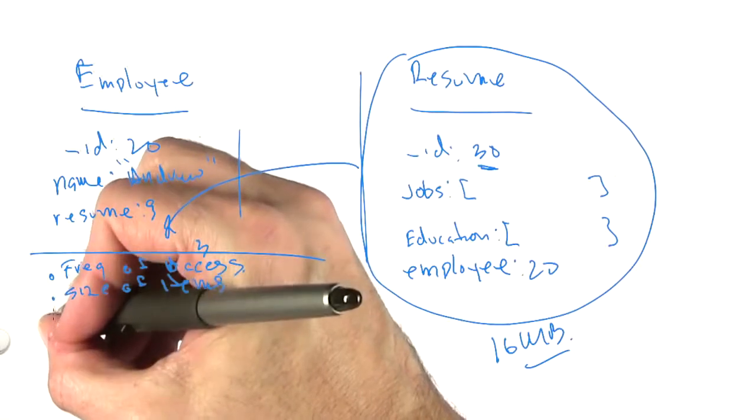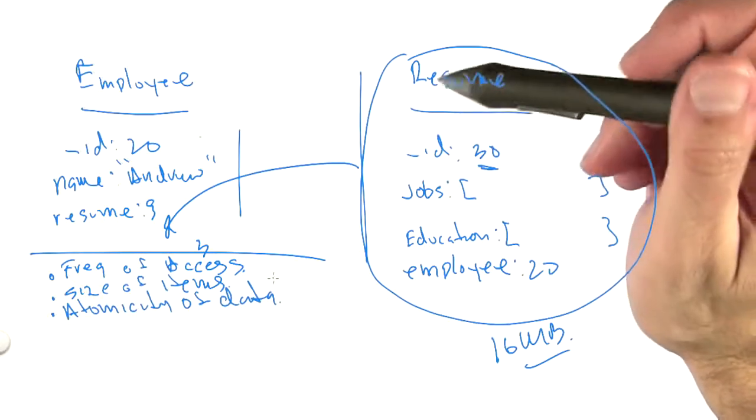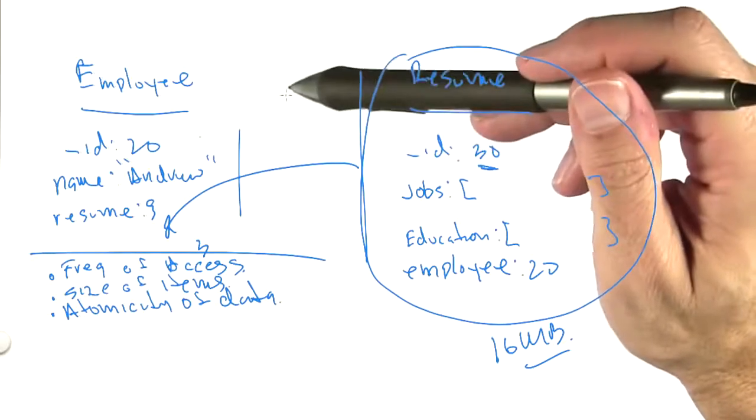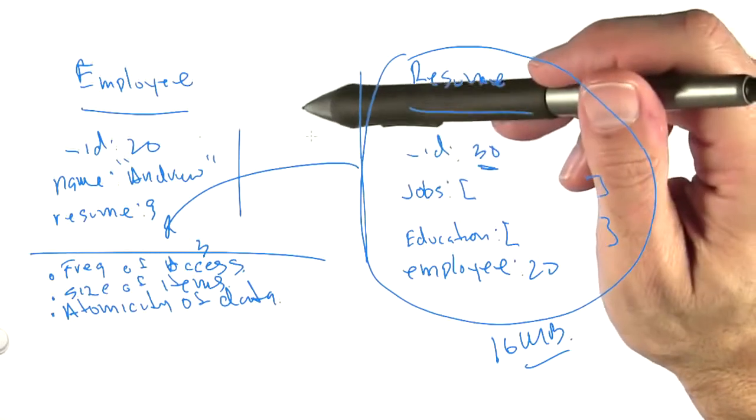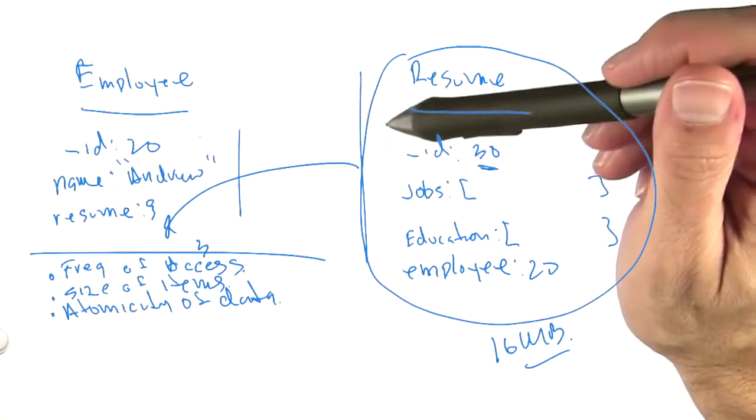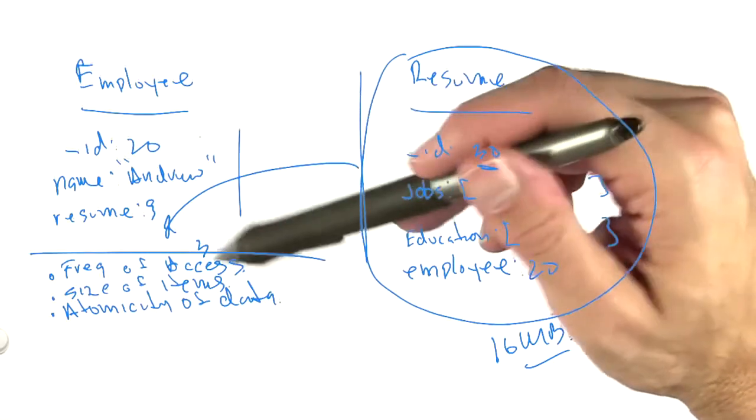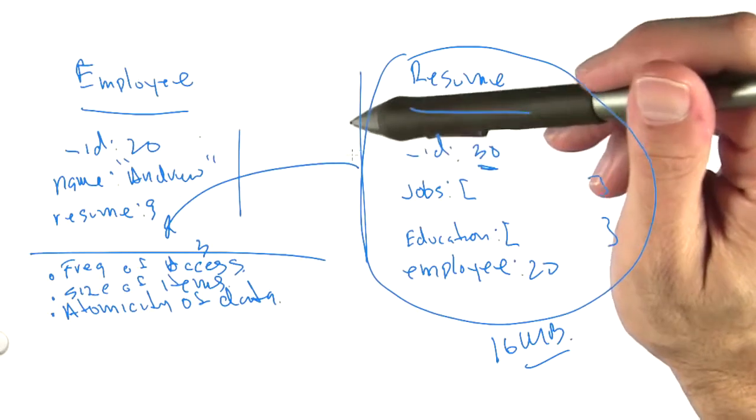And the final consideration is atomicity of data. Now, there are no transactions in MongoDB, but there are atomic operations on individual documents. So if you knew that you couldn't withstand any inconsistency and that you wanted to be able to update the entire employee plus the resume all at the same time, you may decide to put them into the same document and embed them one way or the other so that you can update it all at once.